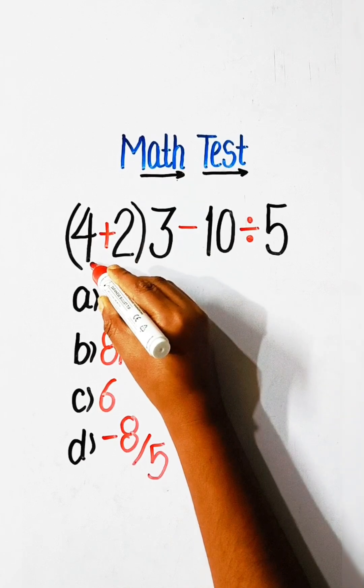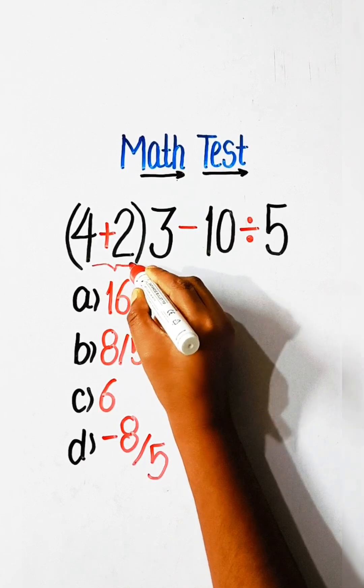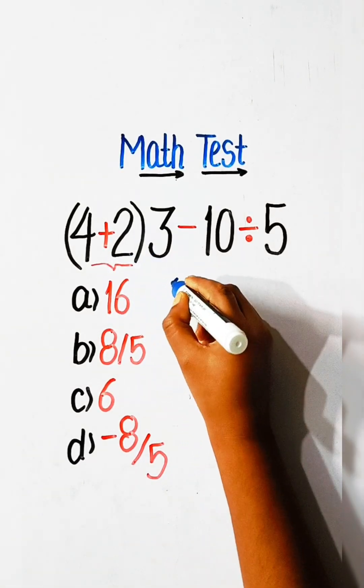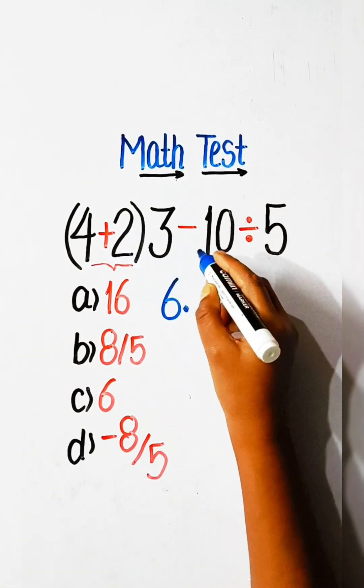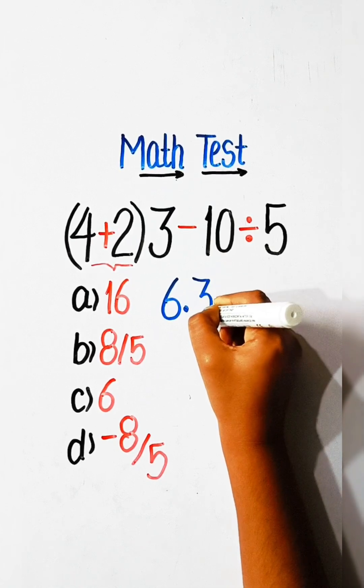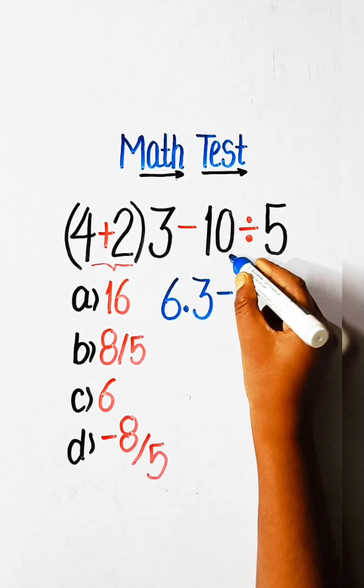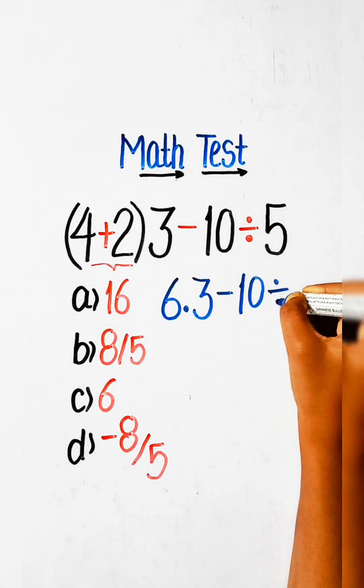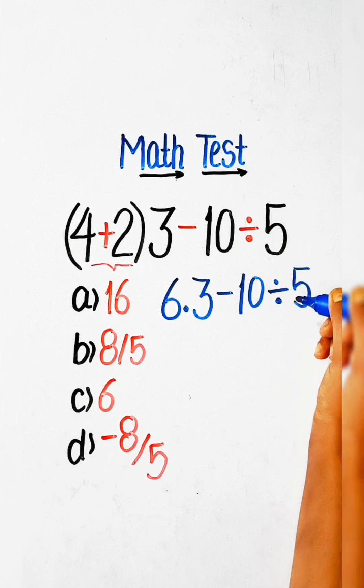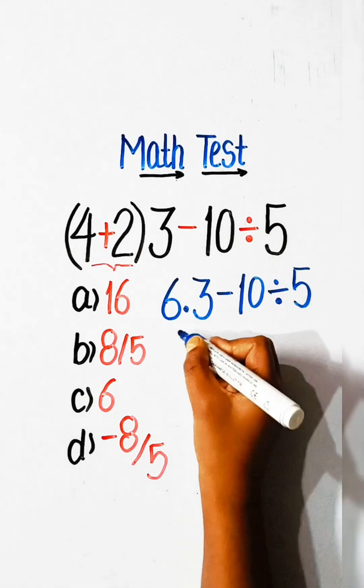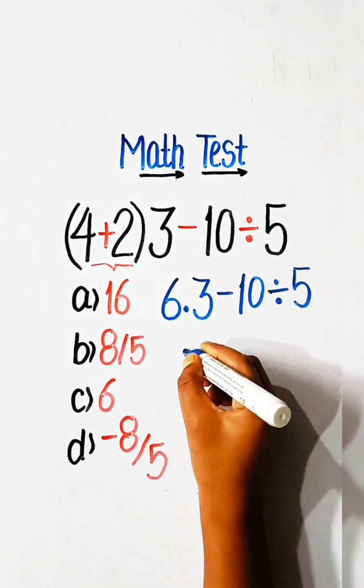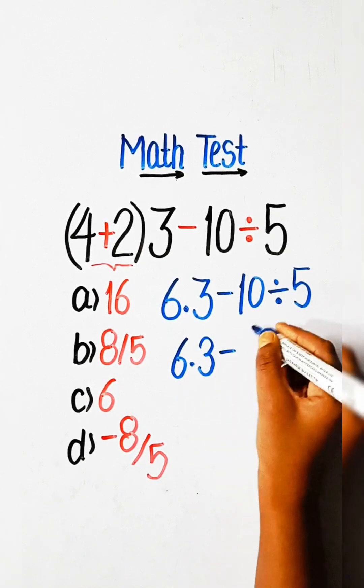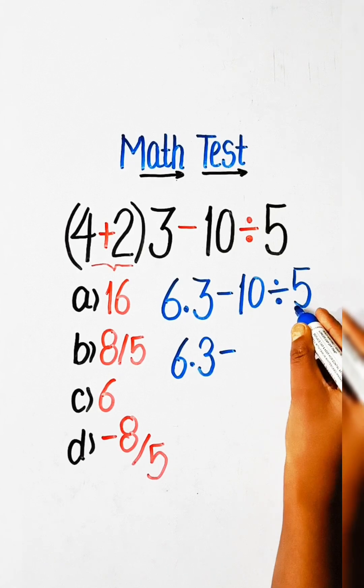Let's solve this. So first of all we have to solve this bracket part. 4 plus 2 is 6, multiply by 3, minus 10 divided by 5.